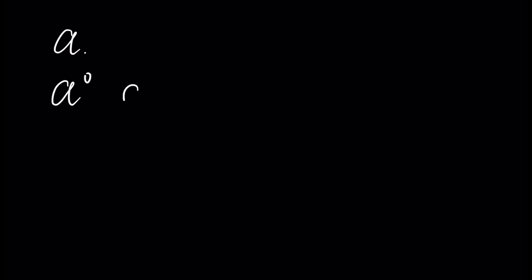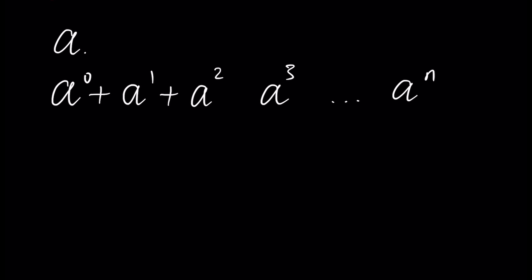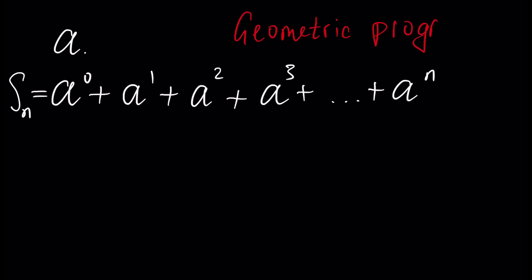First of all, let's define what a geometric progression is. This is a sequence. Assume we fix some number a, and let's write powers of this number: a to the power 0, a to the power 1, a to the power 2, a to the power 3, and so on, a to the power n. Let's assume the sum of these elements and denote it as Sn. How do we find Sn, the sum of elements of our sequence? This sequence is called a geometric progression.